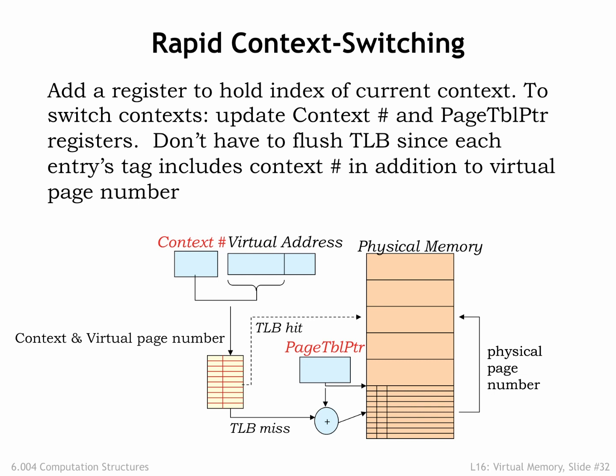To reduce the impact of context switches, some MMUs include a context number register whose contents are concatenated with a virtual page number to form the query to the TLB. Essentially, this means that the tag field in the TLB cache entries will expand to include the context number provided at the time the TLB entry was filled. To switch contexts, the OS would now reload both the context number register and the page table pointer. With the new context number, entries in the TLB for other contexts would no longer match, so there's no need to flush the TLB on a context switch. If the TLB has sufficient capacity to cache the VPN to PPN mappings for several contexts, context switches would no longer have a substantial impact on average memory access time.